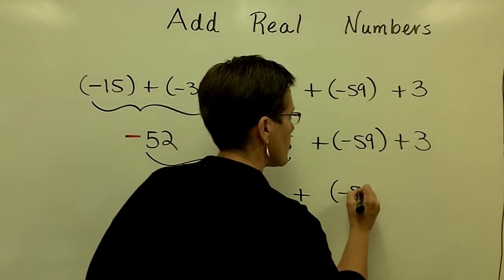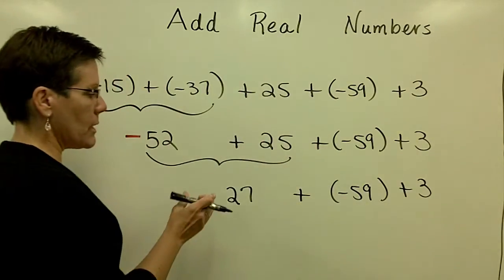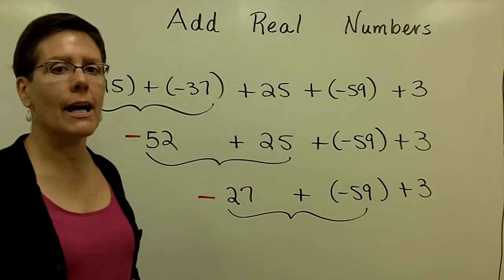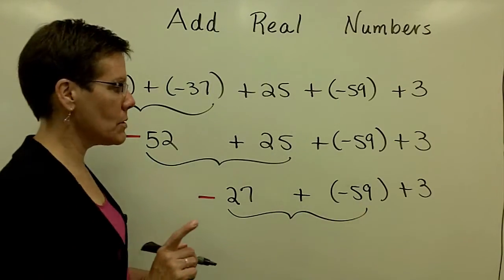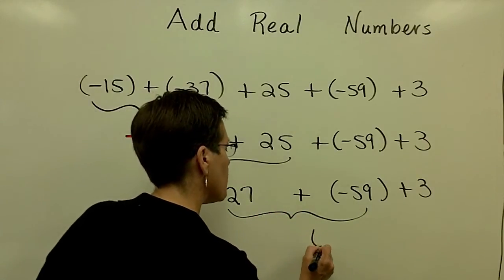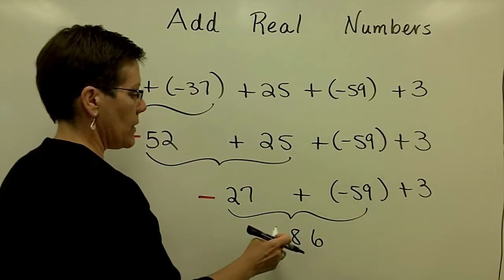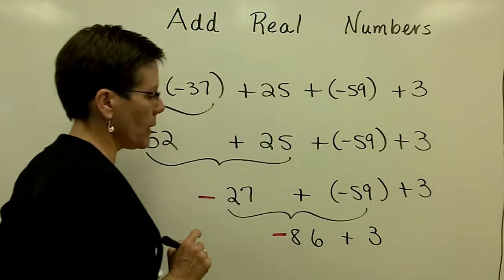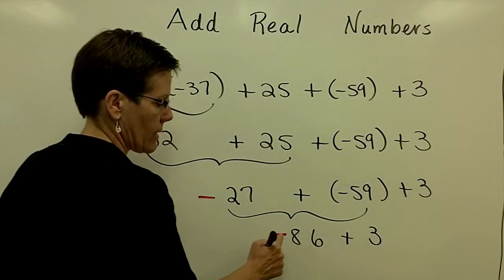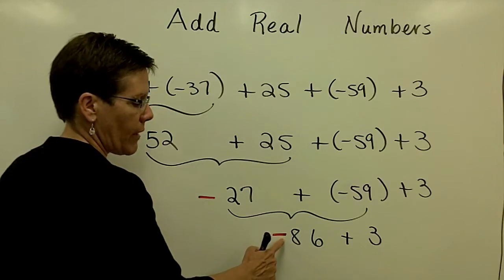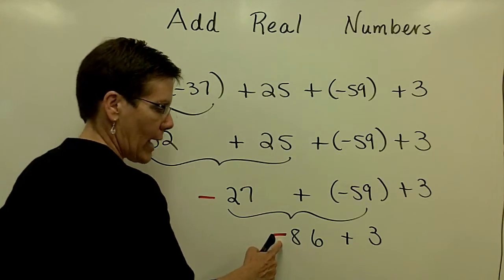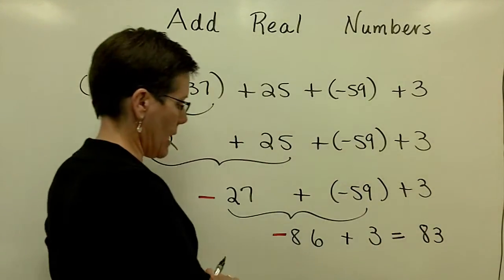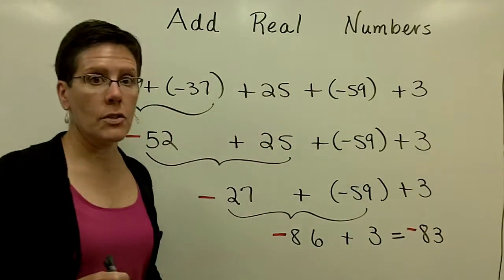Let's bring everything else down and work from left to right. I am now going to add a negative number and a negative number, so they have like signs. I add their absolute values — those two add together to be 86 — and their common sign is negative. And I add this 3 to it. These two have unlike signs, but the negative 86 has more pull, so my final answer will be negative. I subtract their absolute values, and 86 minus 3 is 83. That sign has more pull — and there's my final answer, negative 83.